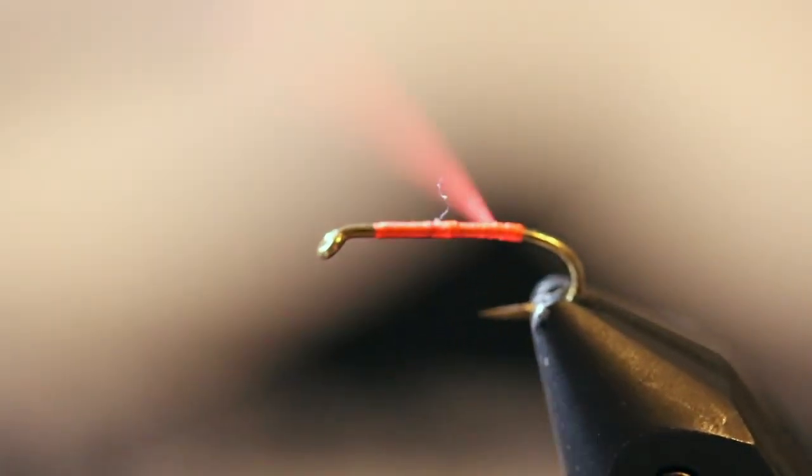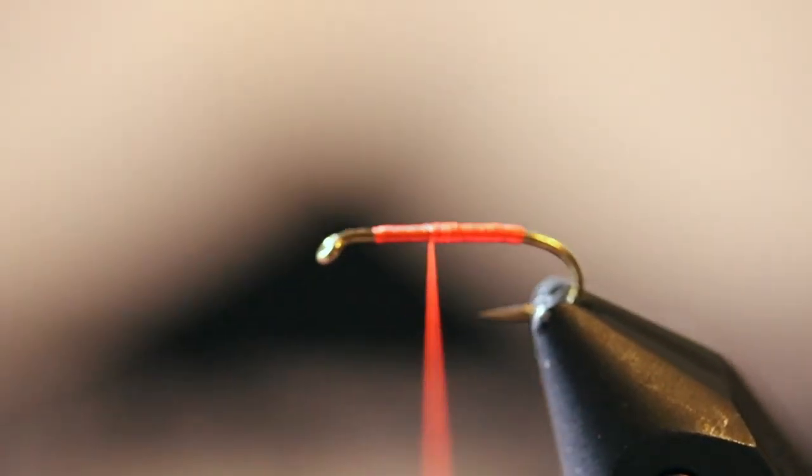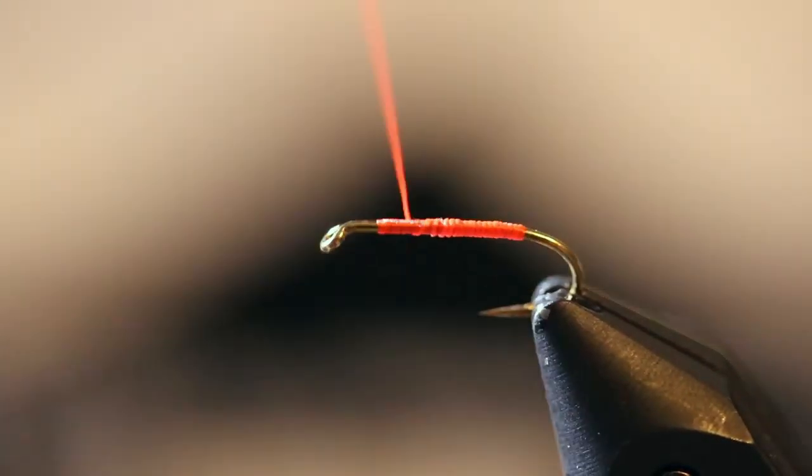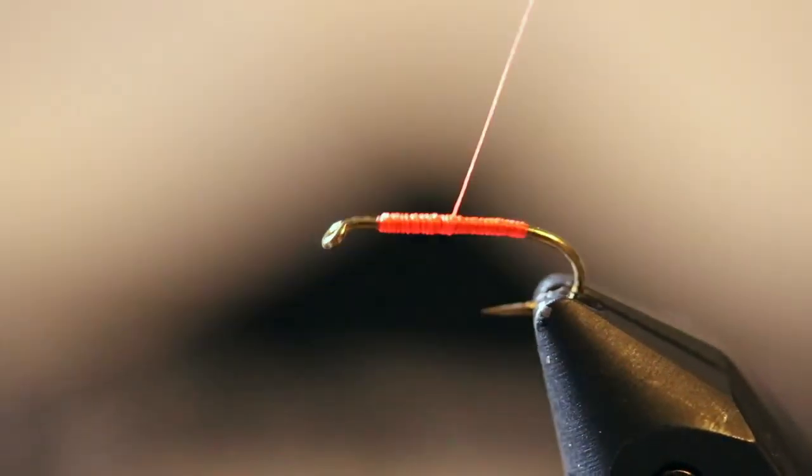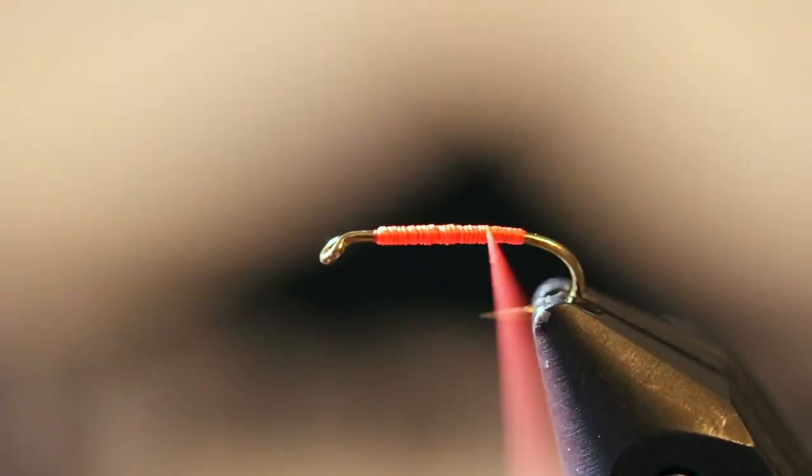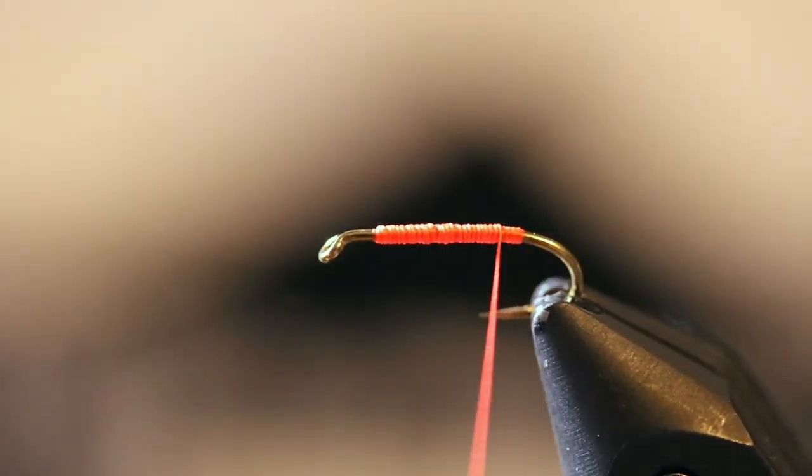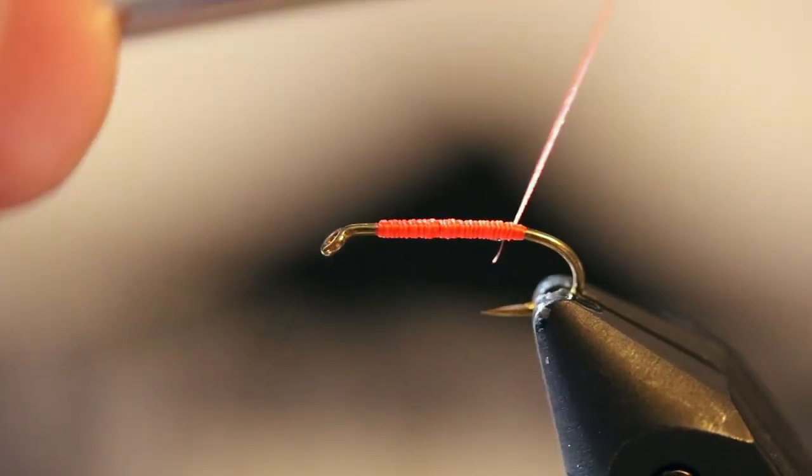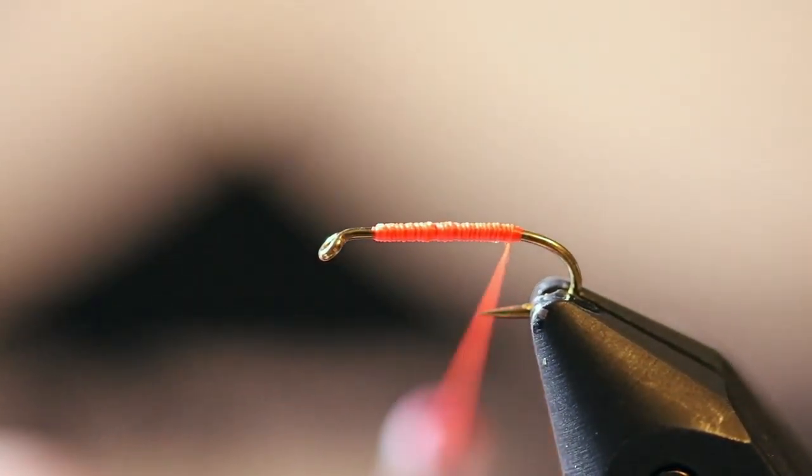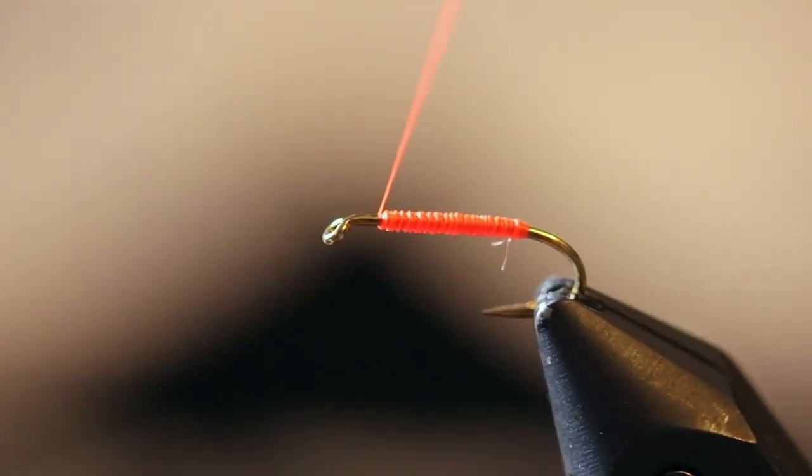Spin your thread to make it flat, unwinding it to get a little bit smoother of a body. Work your way back up to that tie-in point.